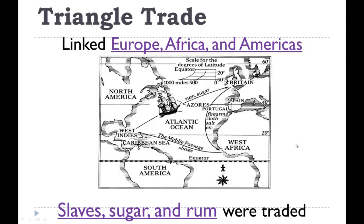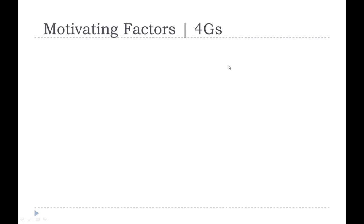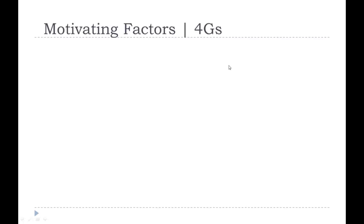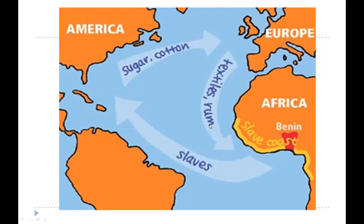You can see why it's called a triangle — there are three legs: textiles and rum, slaves, and sugar and cotton. They would trade whatever raw goods they could bring back. It's basically the first steps of mercantilism.